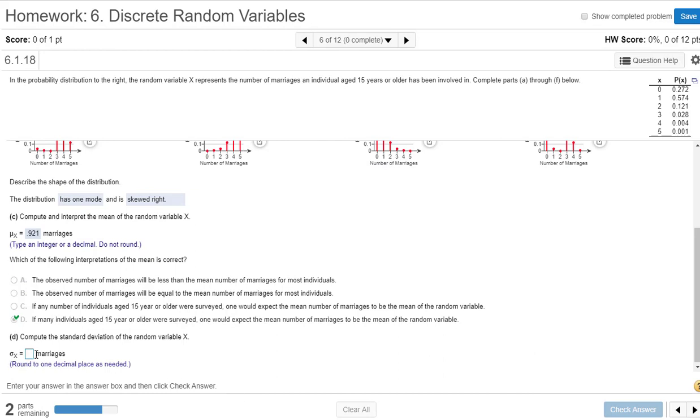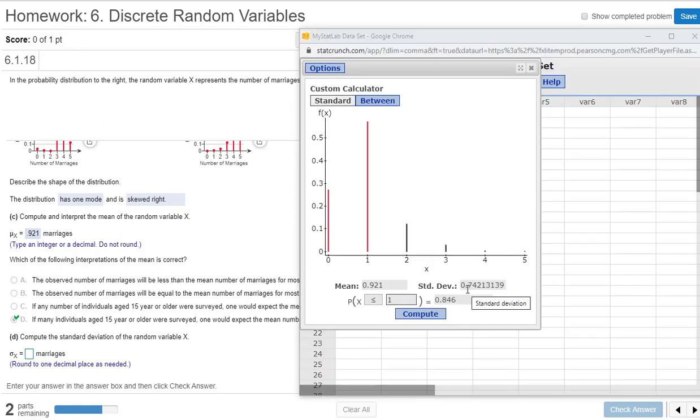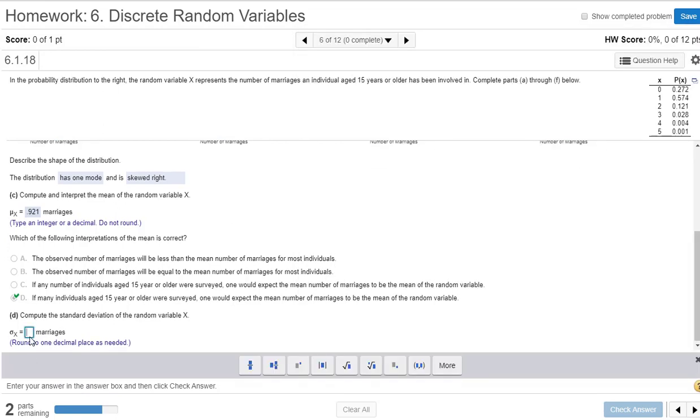Okay, standard deviation. Again, not super easy if you are doing this by hand, but we use that calculator. And it's told me what standard deviation is. It says 0.74, it says round to one decimal place. So 0.7.